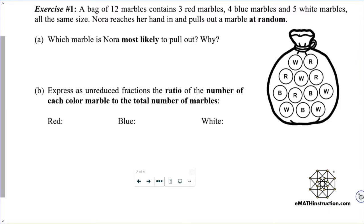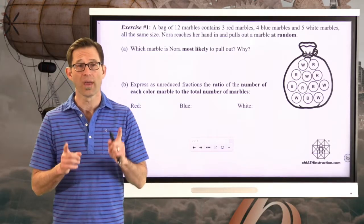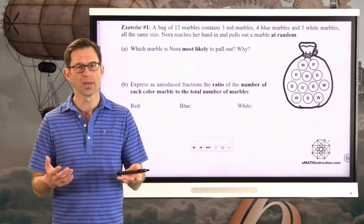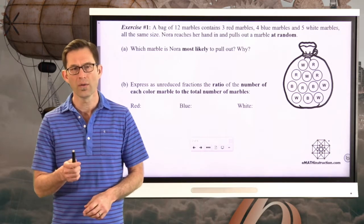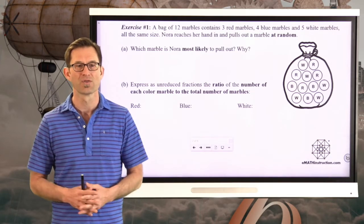Exercise number 1. A bag of 12 marbles contains 3 red marbles, 4 blue marbles, and 5 white marbles, all the same size. Nora reaches her hand in and pulls out a marble at random. Letter A: which marble is Nora most likely to pull out and why? I'd like you to answer question A — this should be pretty easy to think about, but why don't you pause the video and see what the answer is.